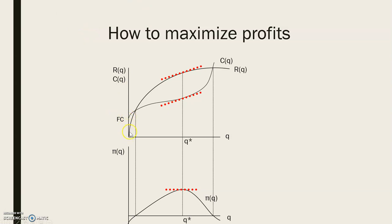We also have the revenues function going through here. We know that the marginal revenues represent the slope of the total revenues function. So if I check the slope at any point of the revenues function, I will be finding the marginal revenues at that point. And if I do the same with the total cost function — if I calculate the slope at any point — I will be calculating the marginal costs at that point.